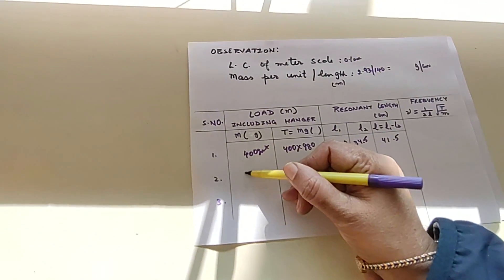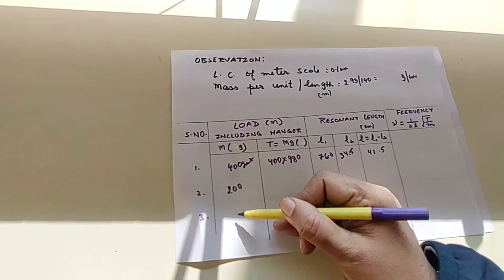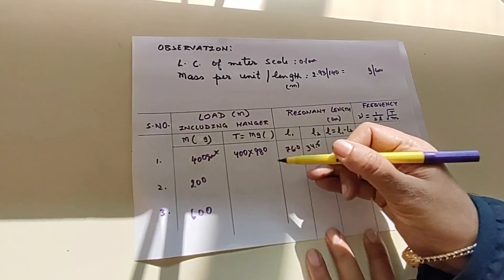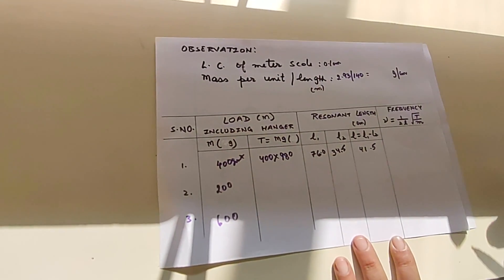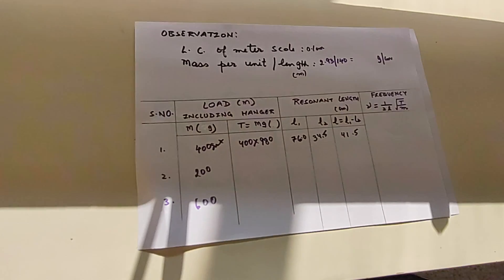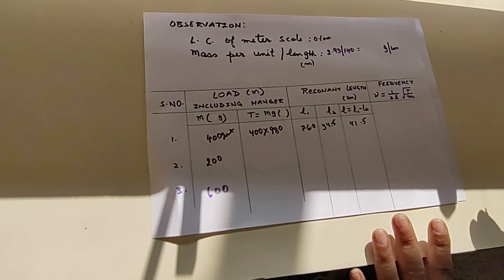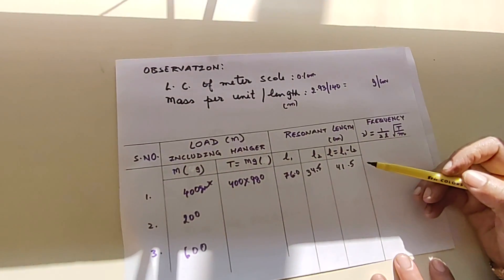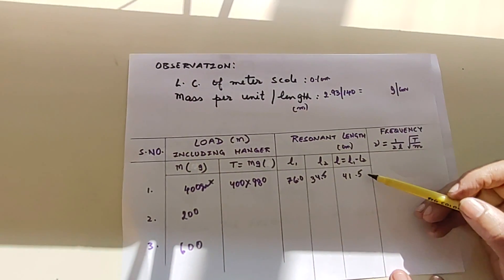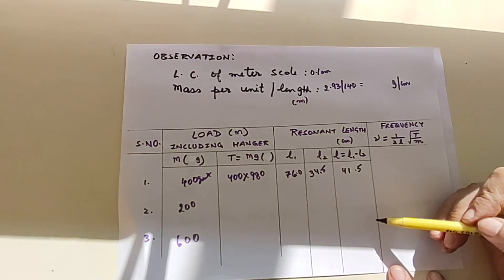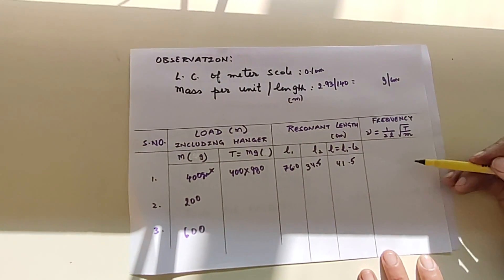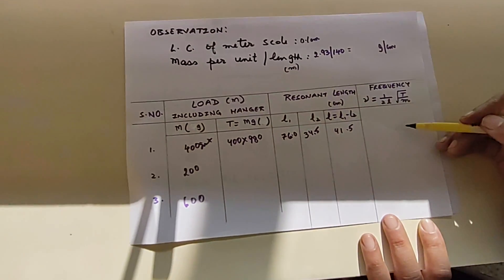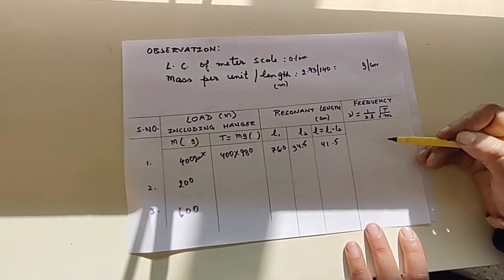Take three observations by changing the load: use 400 grams for the first observation, 200 grams for the second, and 600 grams for the third. Each time, move the bridges from outward to inward until the wire vibrates at the resonating position. Your final answer should come out to approximately 50 hertz — that is the frequency of the AC supply.